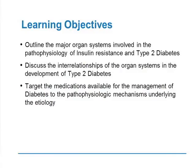For the first part, the objectives of this section are to outline the major organ systems involved in the pathophysiology of insulin and type 2 diabetes, discuss the interrelationships of these organs — how they work to develop diabetes — and then target the medications we have available. We have a number of medications. What are their targets and how can we make them work in a synergistic manner to treat the underlying pathophysiology?